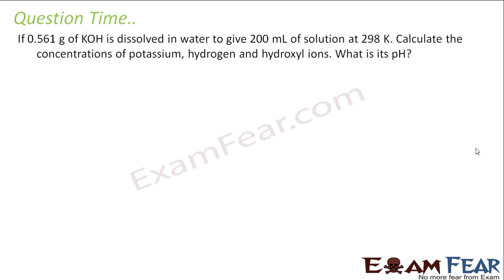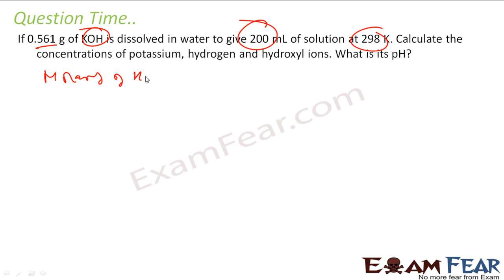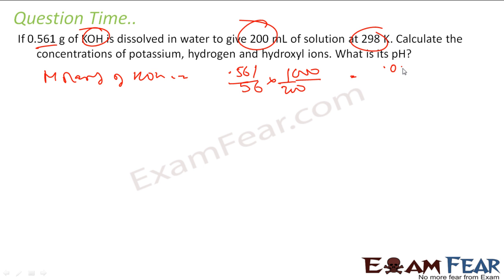The question says 0.561 grams of potassium hydroxide (KOH) is dissolved in 200 mL of solution at 298 K. We need to find the concentration of potassium, hydrogen, and hydroxyl ions. First, find the molarity of KOH: molarity = (0.561 g) / (56 g/mol × 0.200 L) = 0.05M.